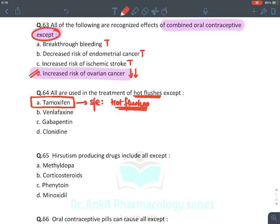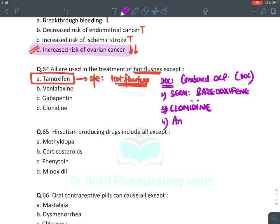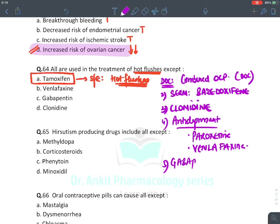Treatment of hot flushes: drug of choice is combined OCP; approved SERM is bazedoxifene; clonidine (inhibits sympathetic vasodilation); antidepressants like paroxetine, venlafaxine (same mechanism); and anti-epileptic gabapentin. These are all approved for hot flushes.